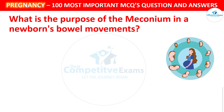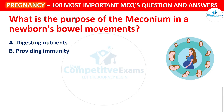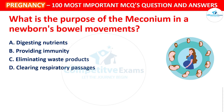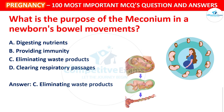Next question: What is the purpose of meconium in a newborn's bowel movement? Your options: Digesting nutrients, Providing immunity, Eliminating waste products, or Clearing respiratory passages. The correct answer is Eliminating waste products. Meconium is the first stool of a newborn, consisting of materials ingested in the uterus, and it helps eliminate waste from the digestive system.